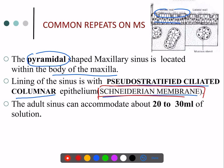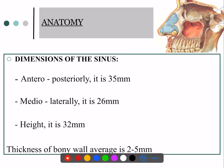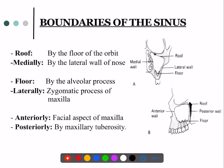The volume of the maxillary sinus is 20 to 30 ml — recently asked in NEET 2019. The dimensions of the maxillary sinus are 35 × 26 × 32 mm, which were asked in COMEDK. The thickness of the bony wall surrounding the maxillary sinus is 2 to 5 millimeters. In many pathological conditions there is thinning of this wall, leading to expansion or invasion of the maxillary sinus.